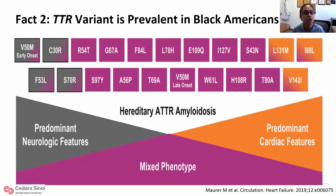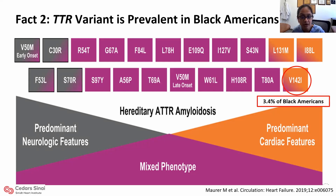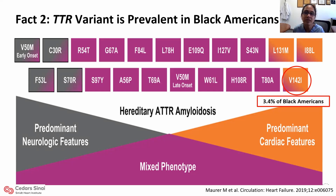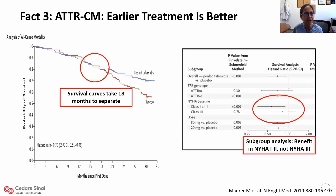The TTR variant is prevalent in Black Americans. Looking at the V142I mutation, which has predominant cardiac features, 3.4% of Black Americans carry this variant. That does not mean 3.4% will manifest disease — there is incomplete penetrance and variable expressivity. However, these patients require a high index of suspicion when they present with heart failure symptoms and increased LV wall thickness, which may not be due to hypertension but rather an infiltrative disease.